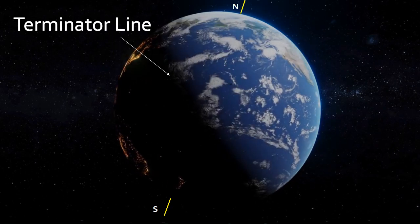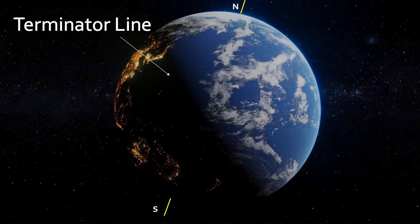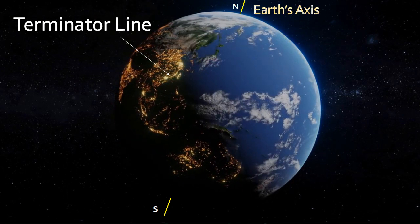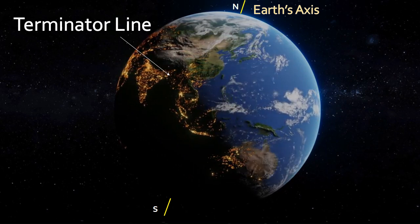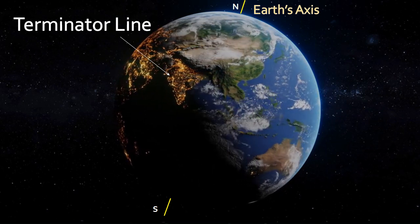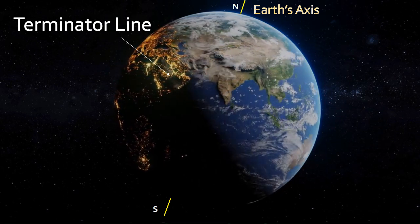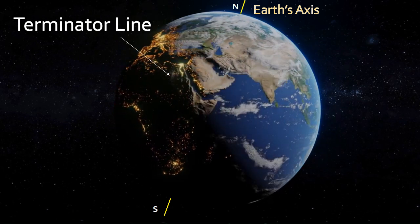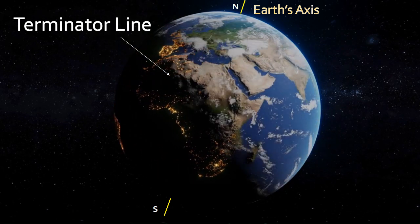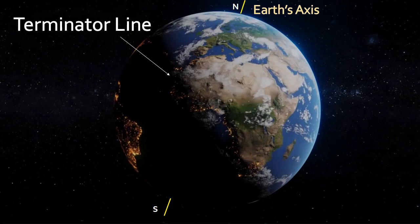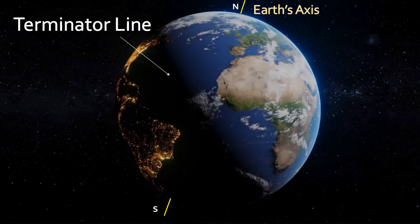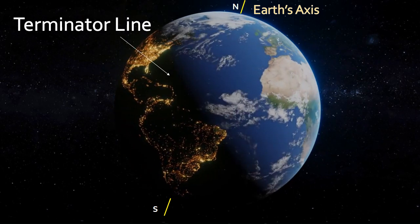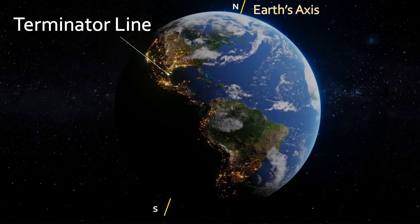As we know, our Earth rotates on an imaginary line which is known as the axis, which runs from North Pole to South Pole, and it takes approximately 24 hours for the Earth to complete one full rotation. During this rotation, different parts of the Earth experience daylight and nighttime.